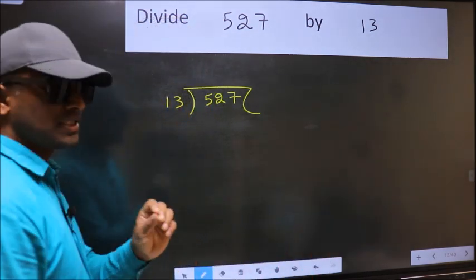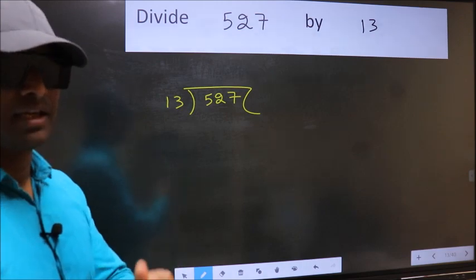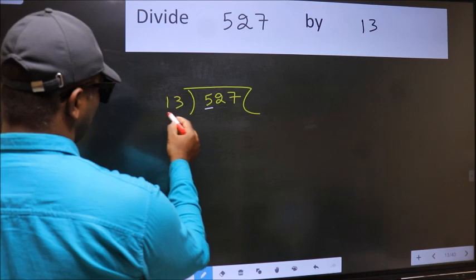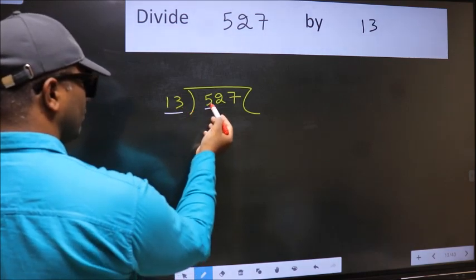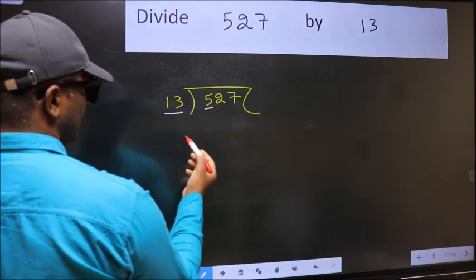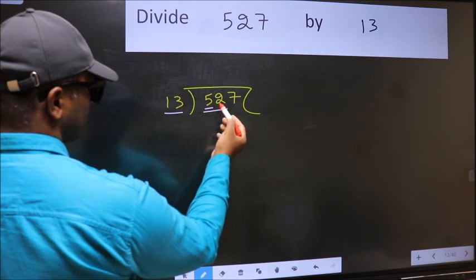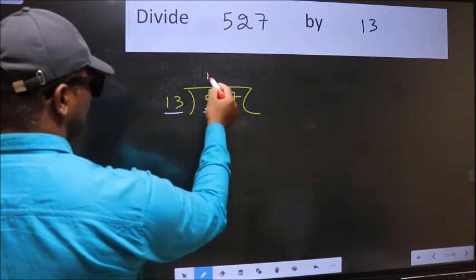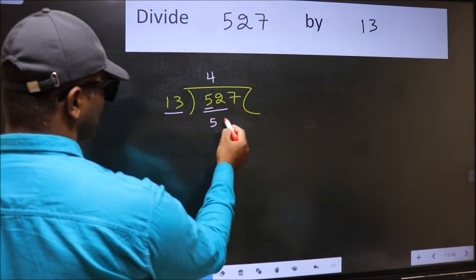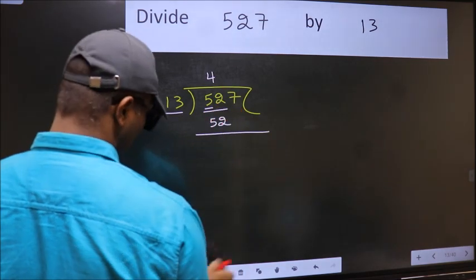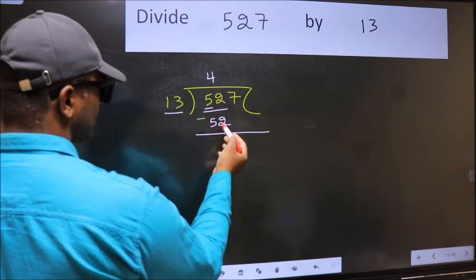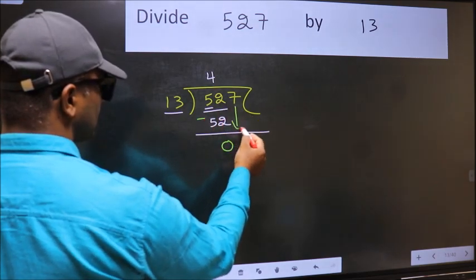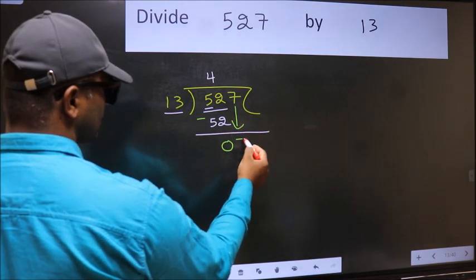This is your step 1. Next, here we have 5 and here 13. 5 is smaller than 13, so we should take two numbers, 52. When do we get 52 in 13 table? 13 fours 52. Now we should subtract 52 minus 52, 0. After this, bring down the beside number, so 7 down.